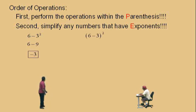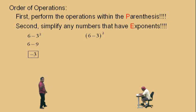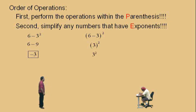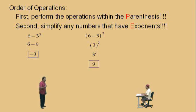Now here's a problem with parentheses. Parentheses first — in this problem with those parentheses, you have to do 6 subtract 3. What's 6 subtract 3, Charlie? Three. So it's 3 squared. Do we need the parentheses around that 3? No — it's a positive 3. So 3 squared is what? Nine. Remember, 3 squared means 3 times 3, which is 9. Go back and review that exponent video if you're having problems.